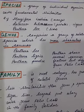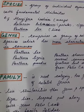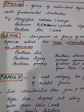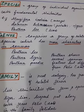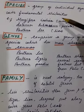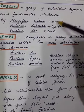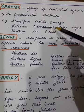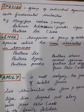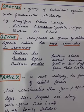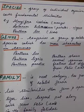Species is a group of individual organisms with fundamental similarities. Examples: Mangifera indica (mango), Solanum tuberosum (potato), Solanum nigrum, and Panthera leo. Here, indica, tuberosum, leo, and nigrum are species names. Solanum tuberosum and Solanum nigrum are different species of the same genus Solanum, differing from each other by certain characters.